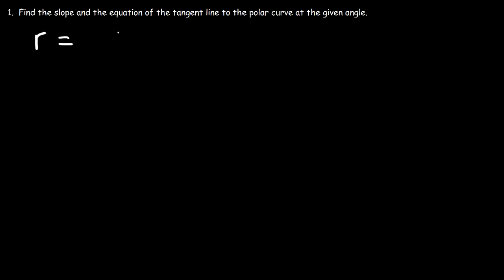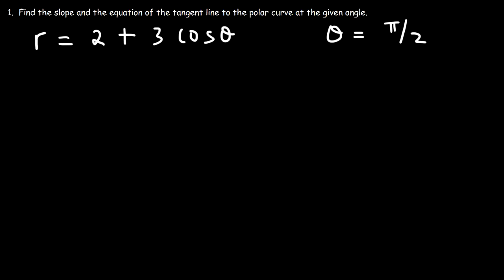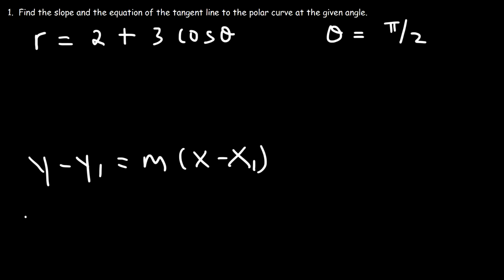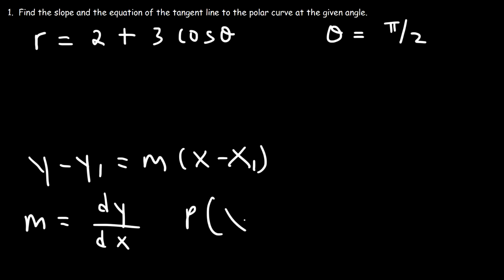Consider the polar equation r = 2 + 3cos(θ). We're going to find the slope and the equation of the tangent line when θ = π/2. To find the equation of the tangent line, I like the point-slope formula. We need to find the slope by finding dy/dx evaluated at θ = π/2, and we need to find the x and y coordinates at that point.